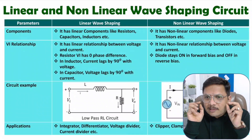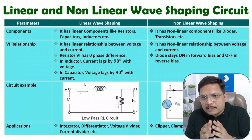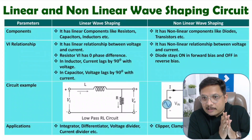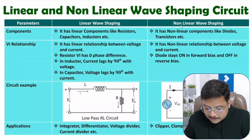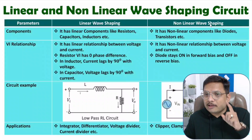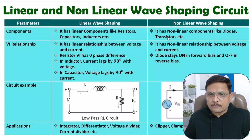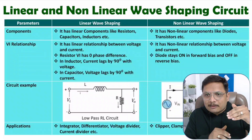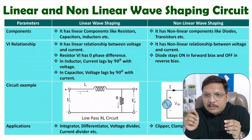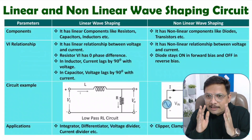In linear wave shaping circuits we use only linear components — resistors, inductors, and capacitors. In non-linear wave shaping circuits, resistors, inductors, and capacitors can also be used, but non-linear devices such as diodes, transistors, MOSFETs, and SCRs are added as well. Based on your application — if input is AC and you want DC output, use a rectifier; if input is DC and you want AC output, use an inverter.